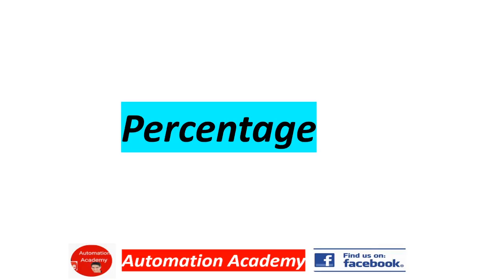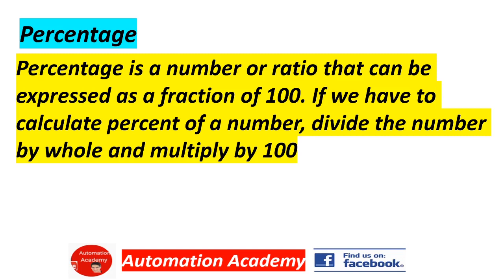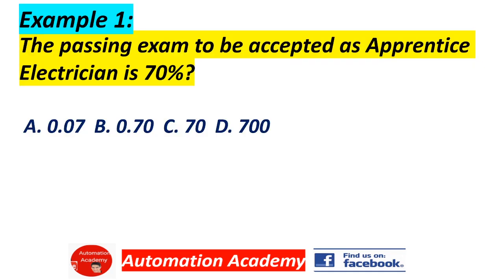Our next topic is Percentage. Percentage is a number or ratio that can be expressed as a fraction of 100. If we have to calculate percent of a number, divide the number by the whole and multiply by 100. Example number 1: The passing exam to be accepted as Apprentice Electrician is 70%. A. 207, B. 2070, C. 70, D. 700. Answer: B, 2070.